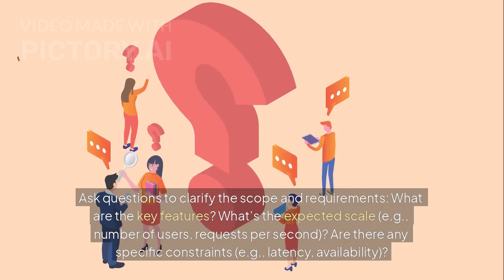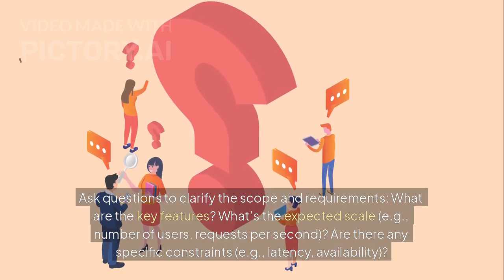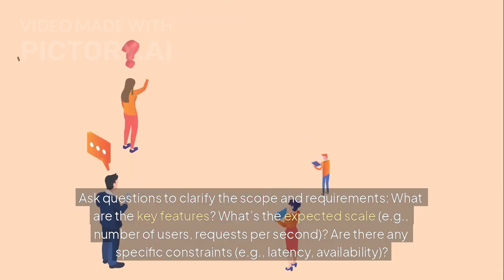What are the key features? What's the expected scale, for example, number of users, requests per second? Are there any specific constraints, like latency or availability?